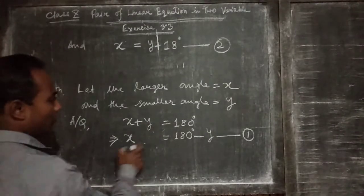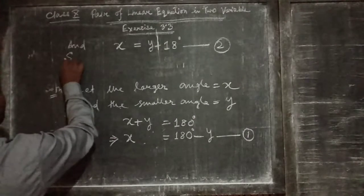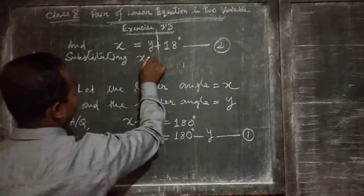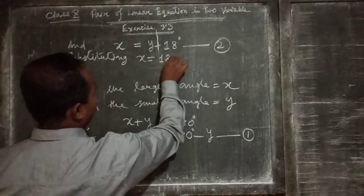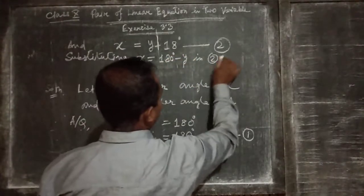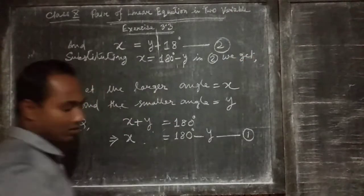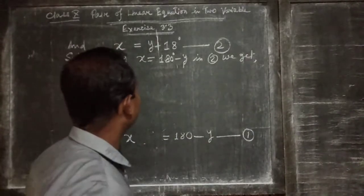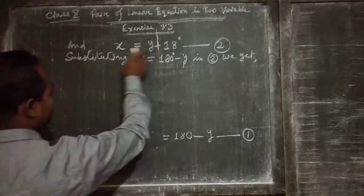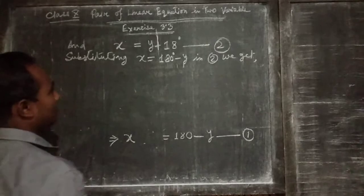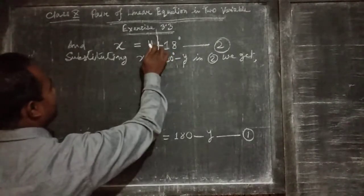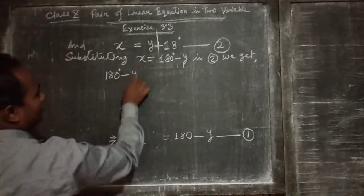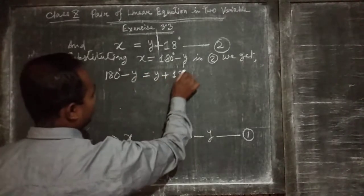Now we substitute the value of x from equation 1 into equation 2. In equation 2, x equals y plus 18. If we put the value of x, which is 180 minus y, we get: 180 minus y equals y plus 18 degrees.